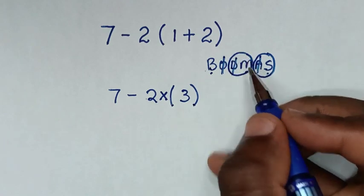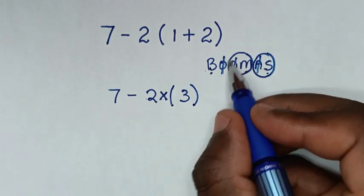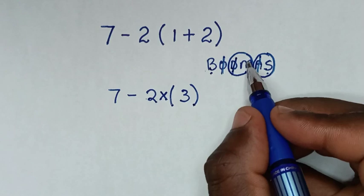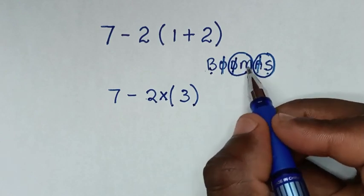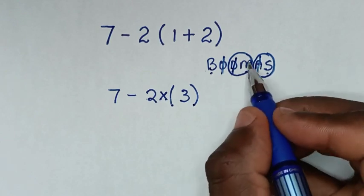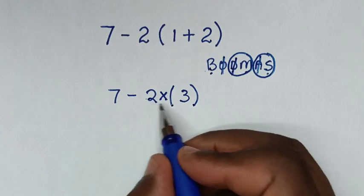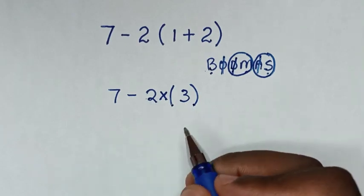In this group we don't have division, we only have multiplication. So we start with multiplication: two times three is six. So it will be seven minus six.